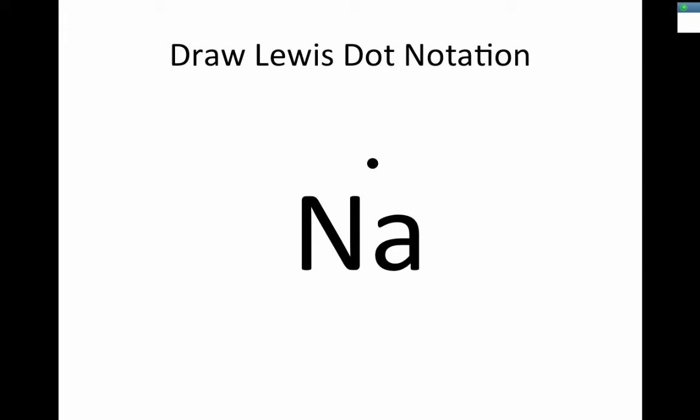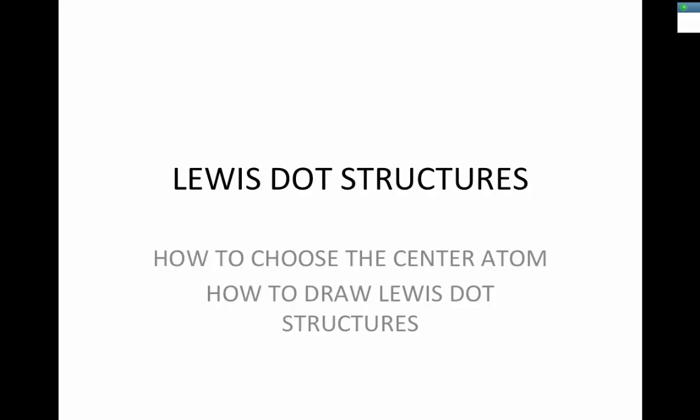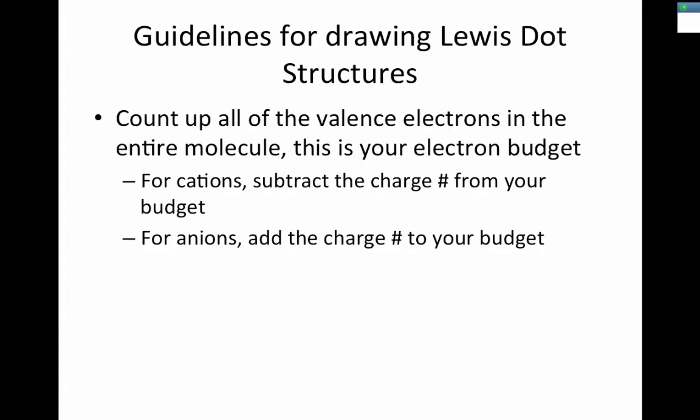I hope that refreshes your memory from before vacation, because now we're going to start talking about drawing Lewis dot structures for molecules. We're going to learn how to take the formula for a molecule, determine the number of valence electrons in the entire molecule, and then learn how to choose the center atom and draw the structure.